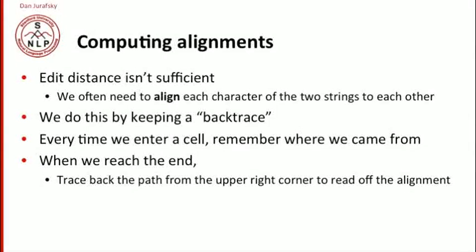The way we compute this alignment is we keep a backtrace. A backtrace is simply a pointer when we enter each cell in the matrix that tells us where we came from. When we reach the end, the upper right corner of our matrix, we can use that pointer and trace back through all the pointers to read off the alignment.